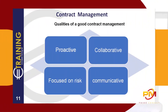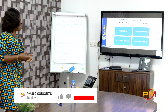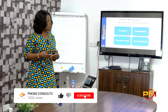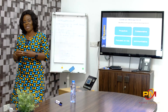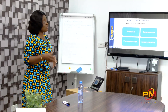Proactive in the sense that in contract management you need to envisage risk, because risk is inherent. Also, during contract execution, because it involves two parties, there is the possibility of disputes that may arise. Therefore, as a good contract manager, you should be able to identify as early as possible any risk or disputes that could occur.